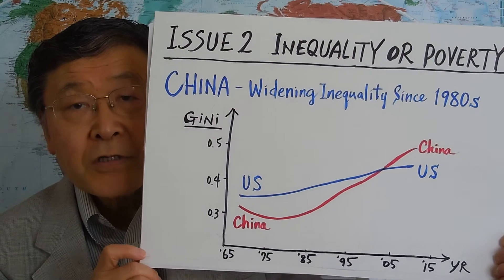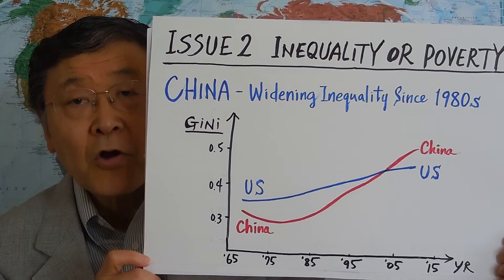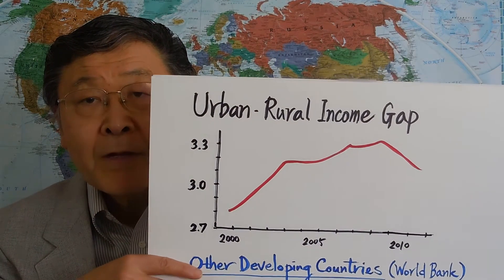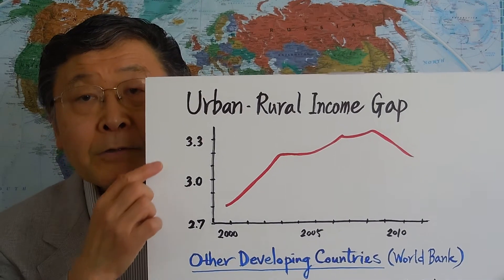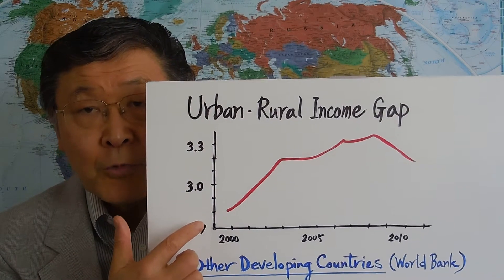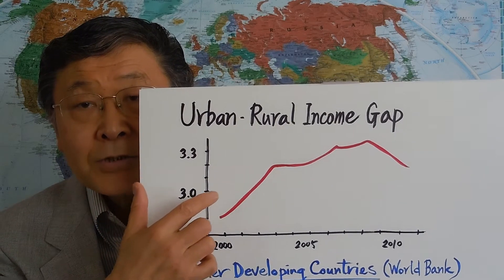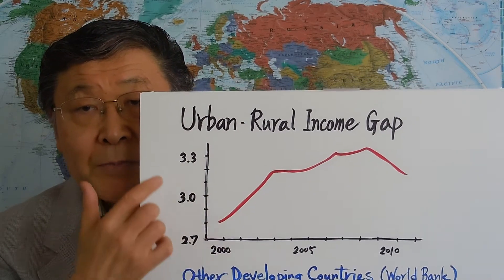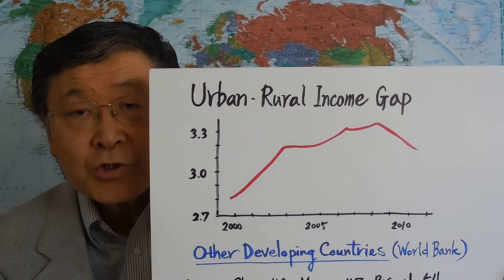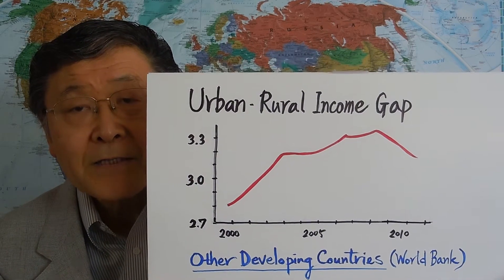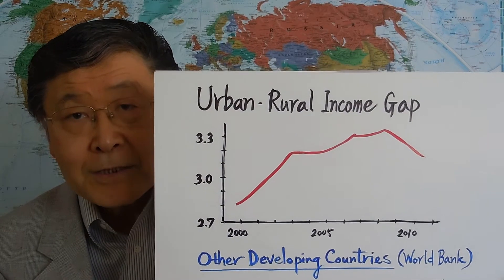Why is this the case? What caused this rapid increase in the degree of inequality in China? There seem to be a lot of reasons. One of the main reasons may be the huge gap between urban wage and rural wage. The ratio of urban wage to rural wage is something like 3.0, meaning the wage in the urban area is about three times as high as that in the rural area. That's a huge difference.